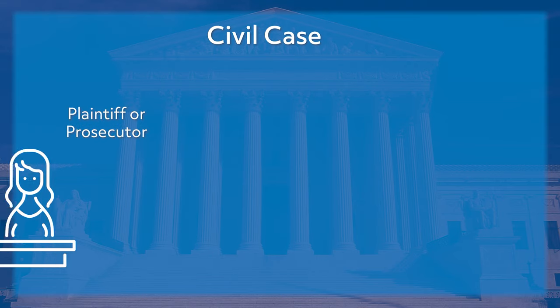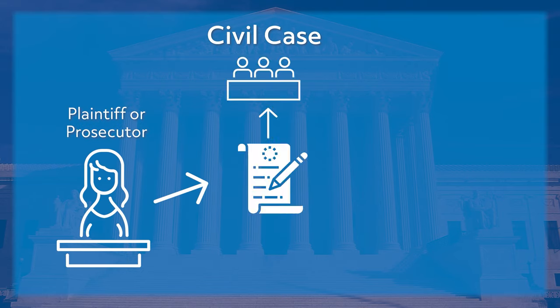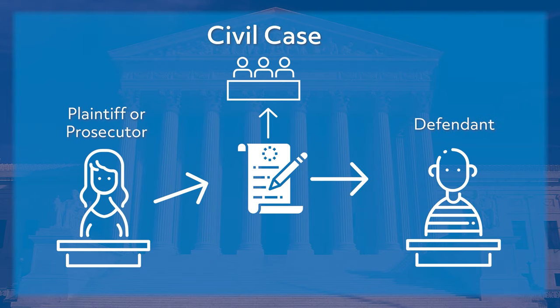There are two types of cases you can bring before an American court: criminal and civil. To begin a civil lawsuit in federal court, the plaintiff files a complaint with the court and serves a copy on the defendant. The complaint describes the plaintiff's damages or injury, explains how the defendant caused the harm, shows that the court has jurisdiction, and asks the court to order relief. A plaintiff may seek money to compensate for damages or may ask the court to order the defendant to stop the conduct causing that harm.